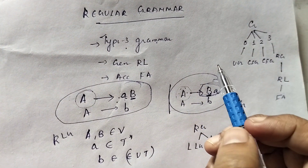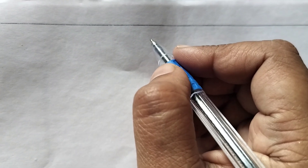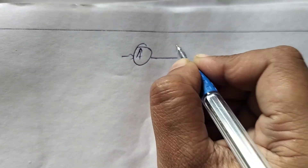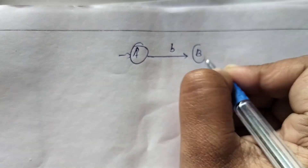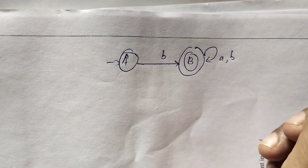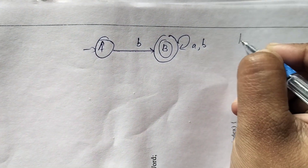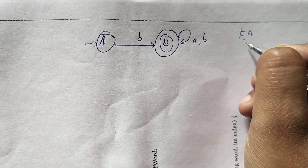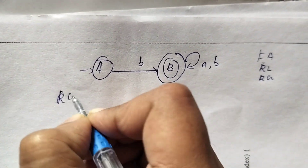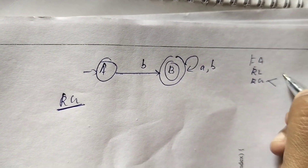Suppose you are asked to write a regular grammar for a given automata. Consider an automata where the starting state, while seeing input symbol 'b', goes to state B, and there is a self-loop at state B. This is a finite automata — an acceptor — and the corresponding language is a regular language, so the corresponding grammar is a regular grammar. You can write either a left linear or right linear grammar.